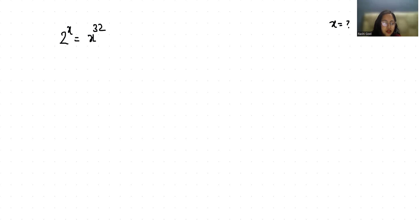2 power x equals x power 32. I am going to multiply with 1 by 32 power on both sides so we can cancel out this.